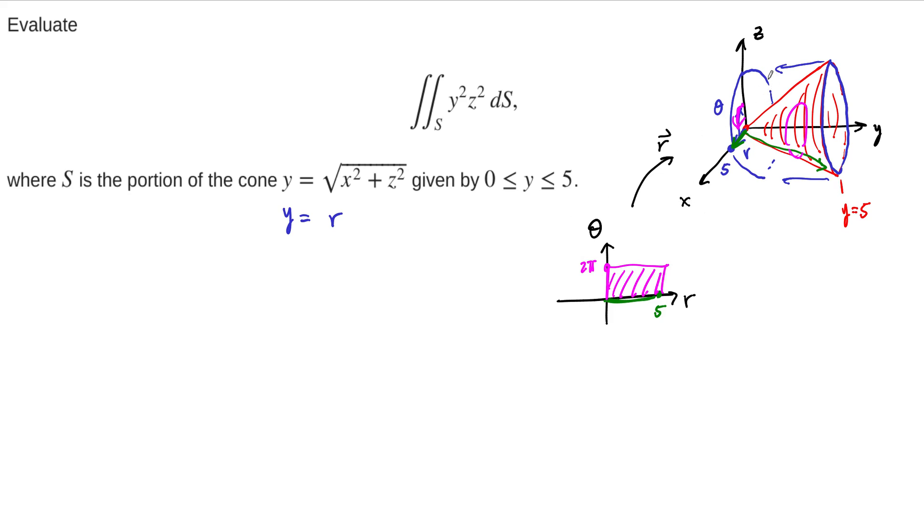All right, and we need to be able to write down a formula for this thing. So we know that in these coordinates, x and z now are given by the polar coordinates, and y is just going to be given by r. y is just going to be equal to r here.